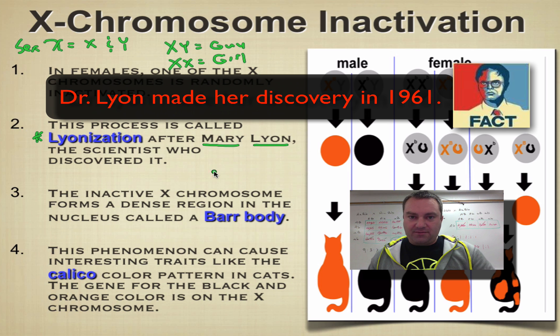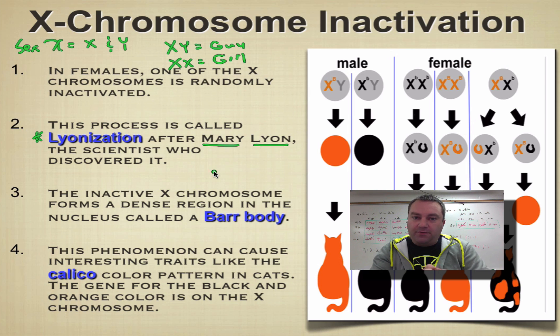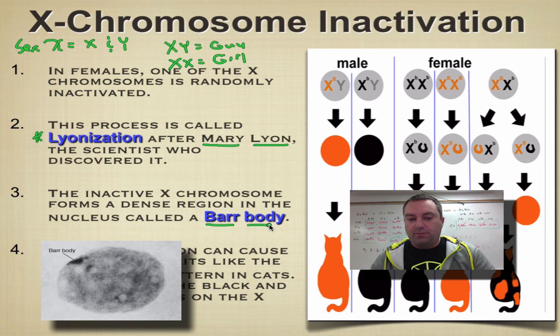What do we mean by inactivation? Randomly in each cell in a female, one of these X chromosomes is going to be wadded up into a ball and tossed away into a corner of the nucleus. When it gets wadded up into a ball and it's inactivated, we call that inactivated chromosome a Barr body.